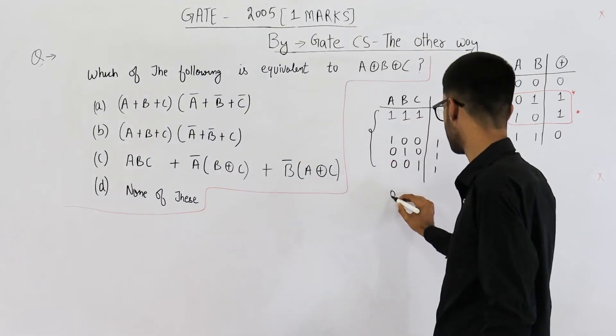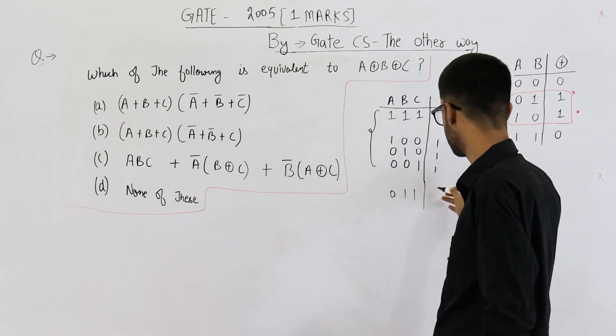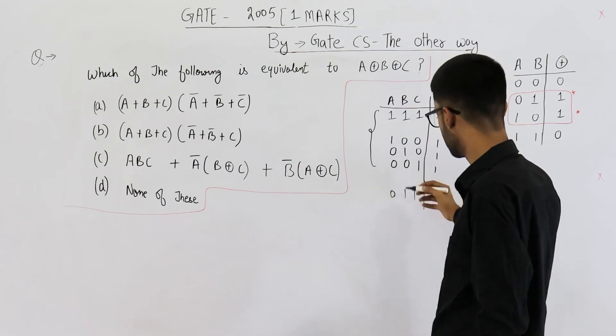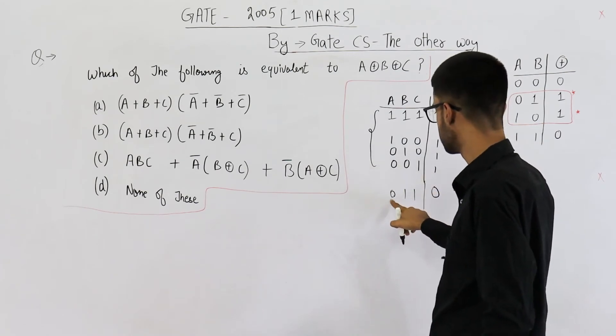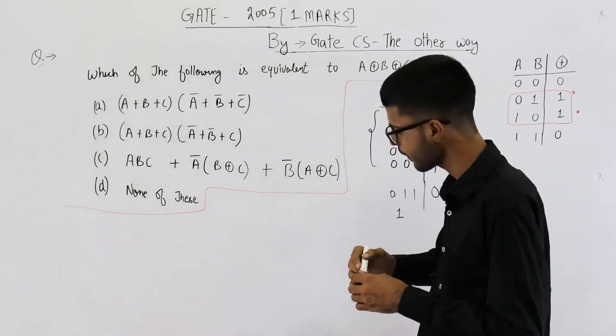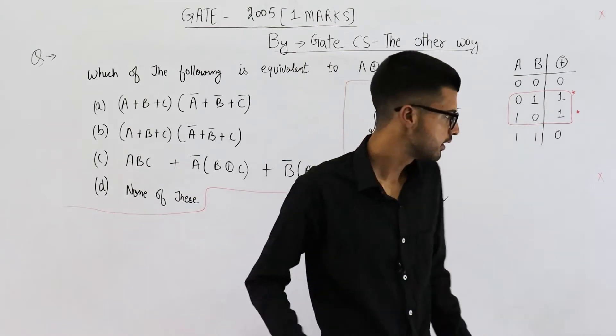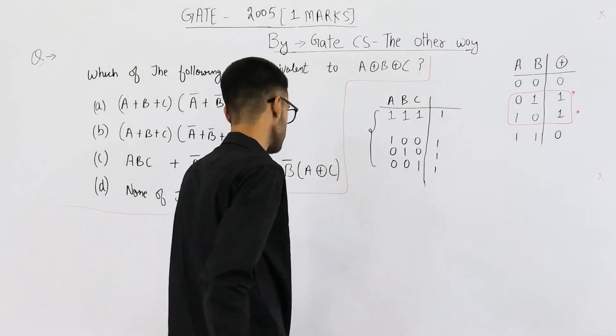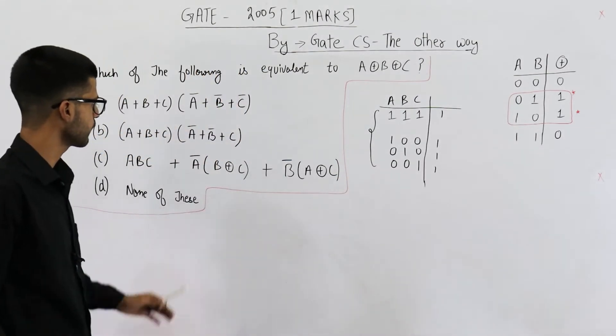You can just see it. 0, 1, 1. What will be the output? Let's see. Obviously, we know we have even number of 1s. It's going to be 0. But still, let's analyze it. 0 XOR 1 is 1 and 1 XOR 1 is 0. So there are only these four cases for which the output is going to be 1.